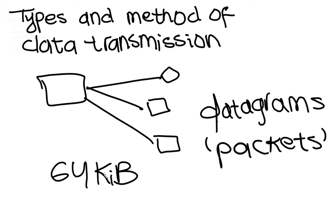So, for example, if this route is very busy and has a lot of traffic, then the data can be sent via an alternative route, like this route or this route.